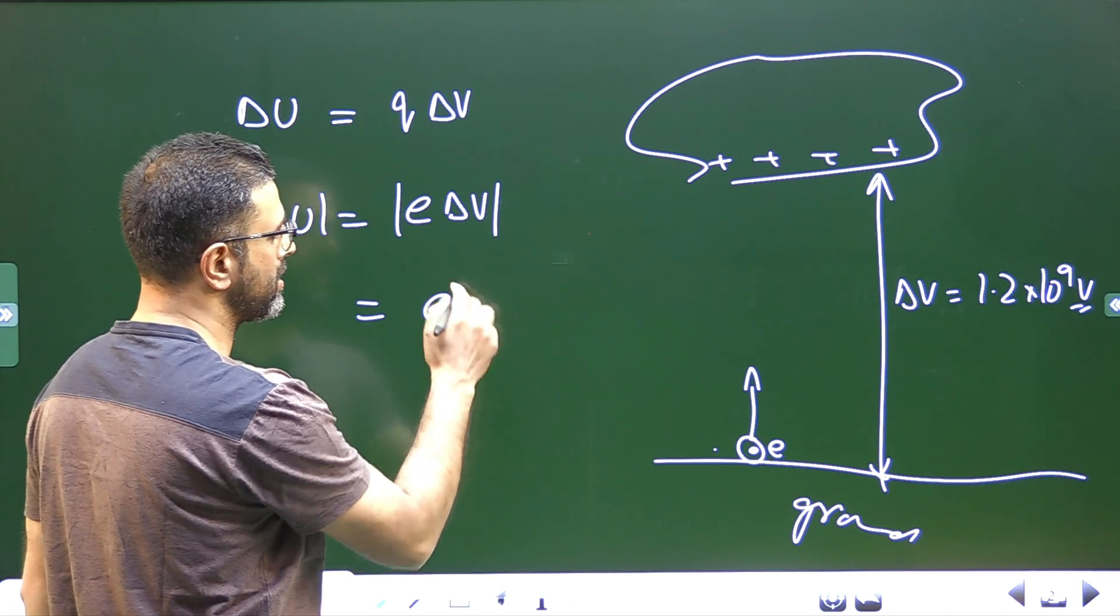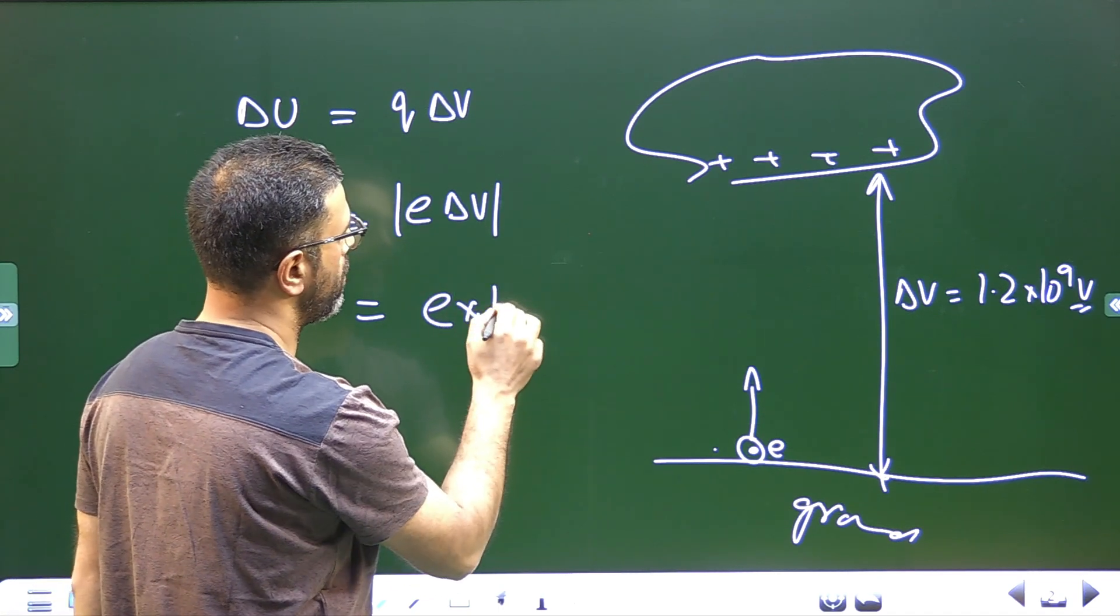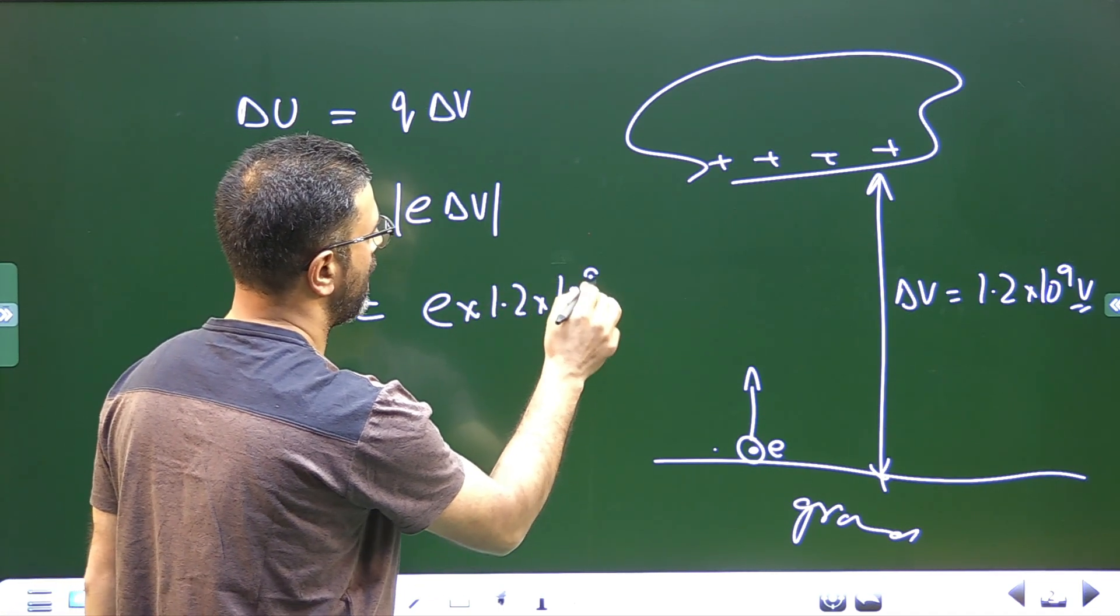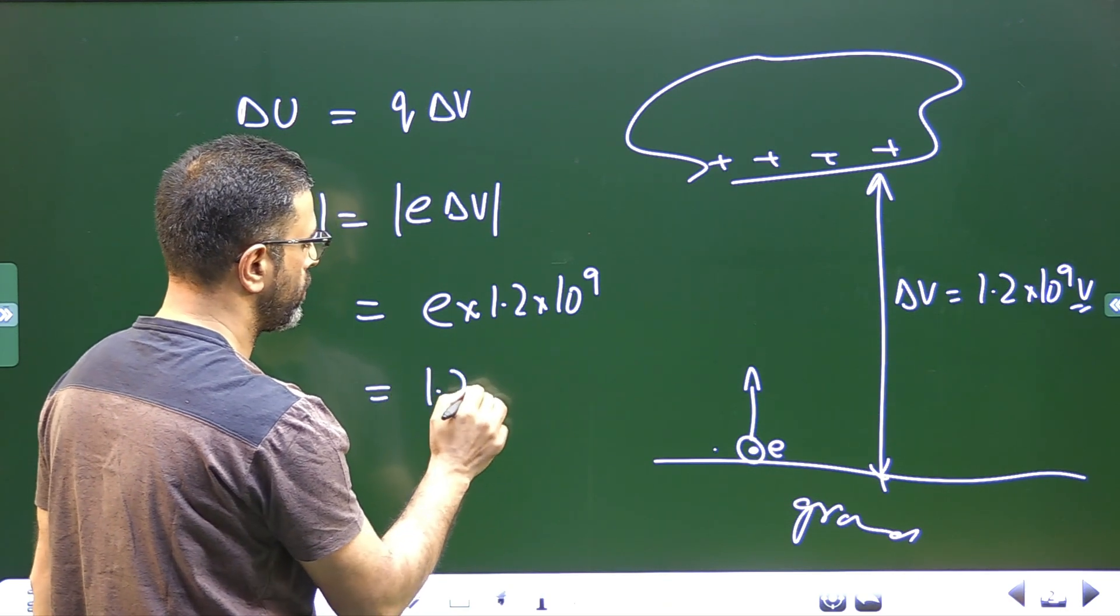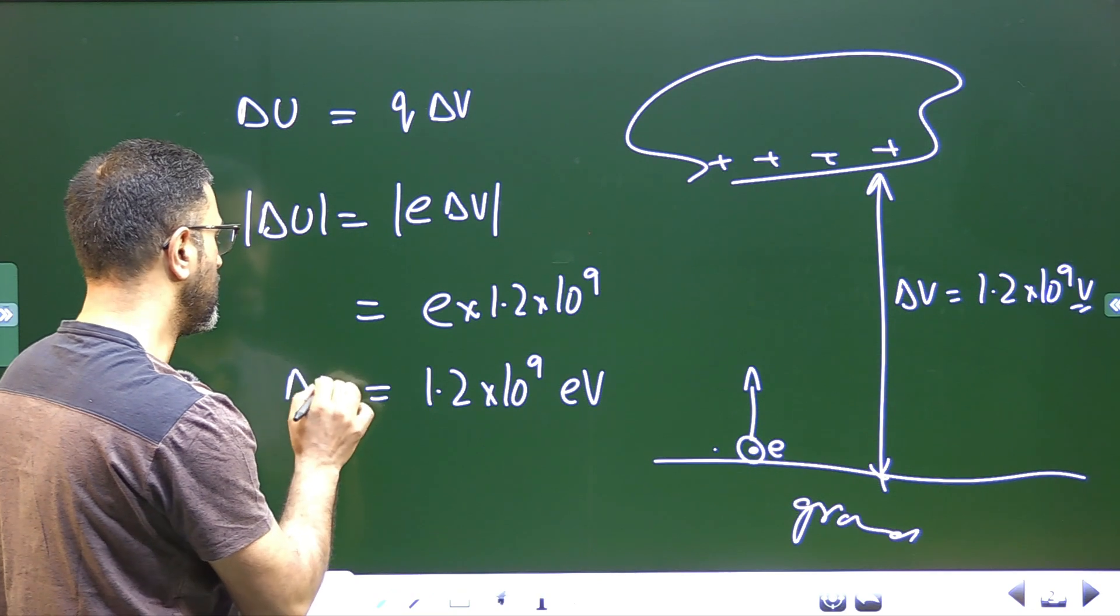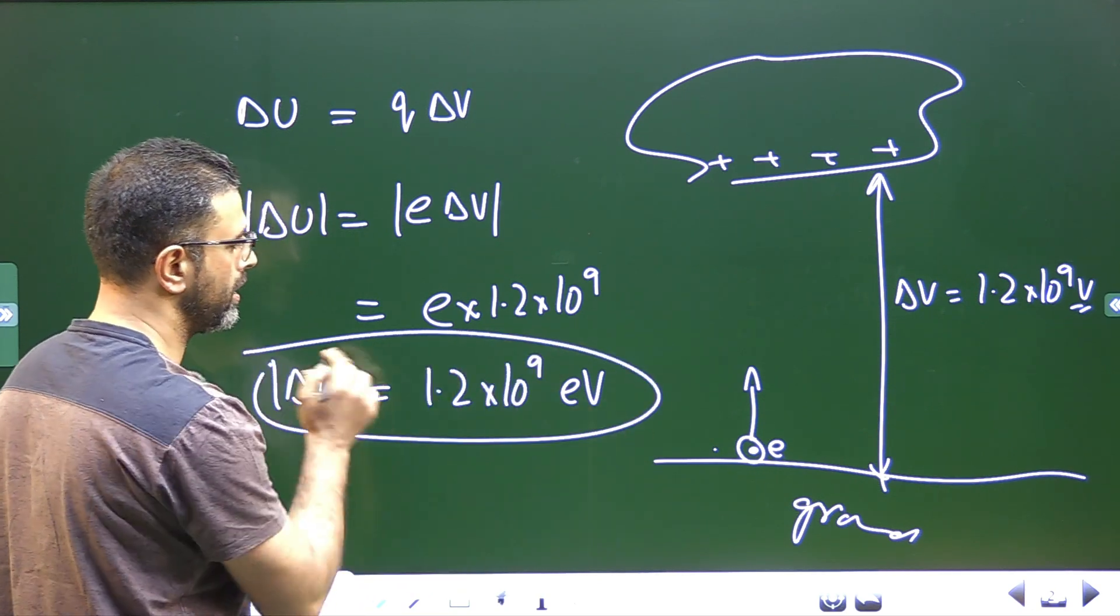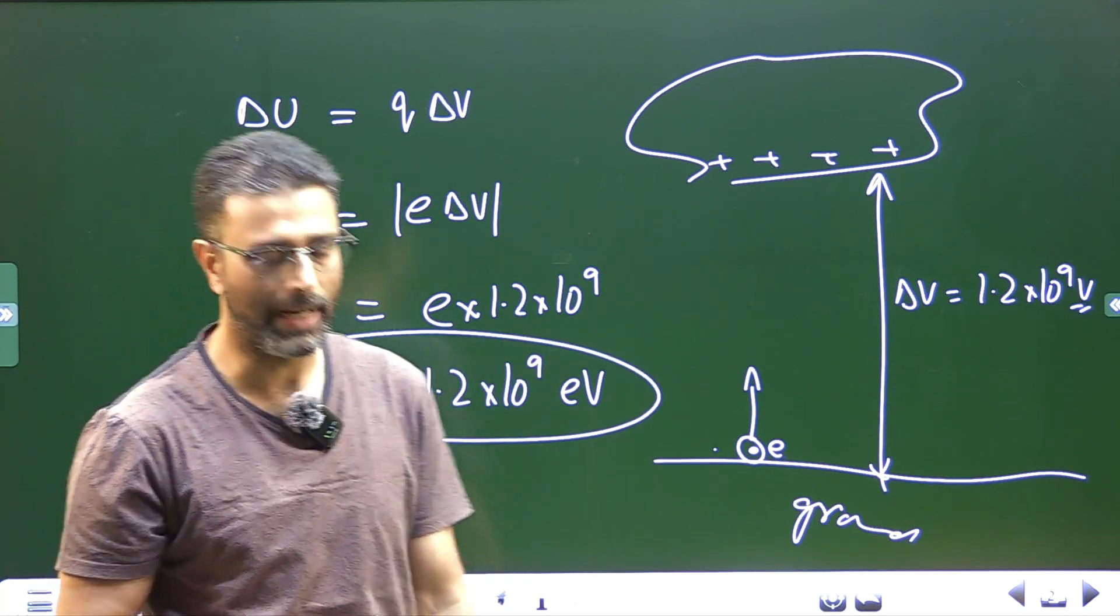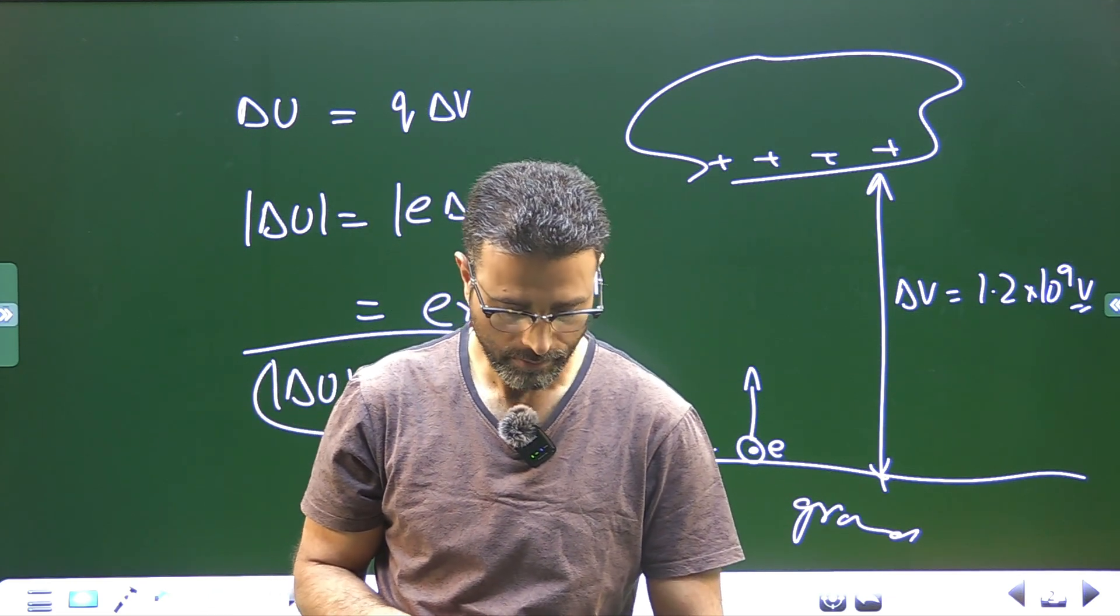So I will keep E the way it is, then delta V is 1.2 into 10 to the power 9, so this becomes 1.2 into 10 to the power 9 electron volt. So change in energy of the electron is 1.2 into 10 to the power 9 electron volts.